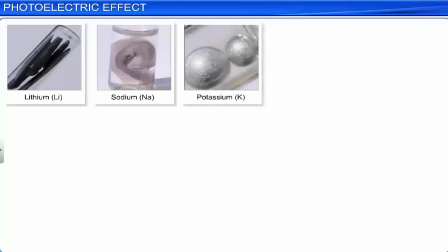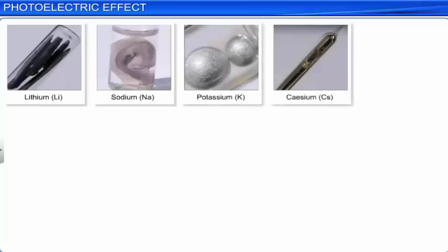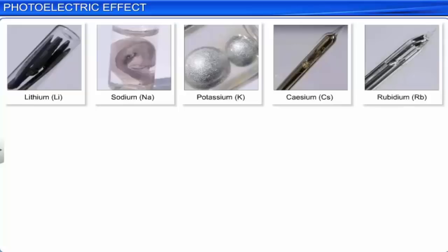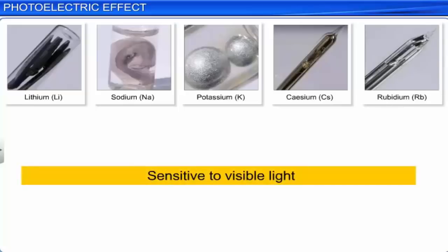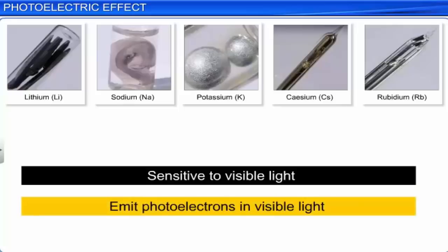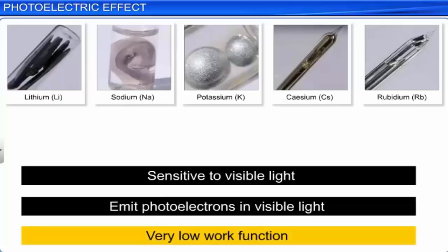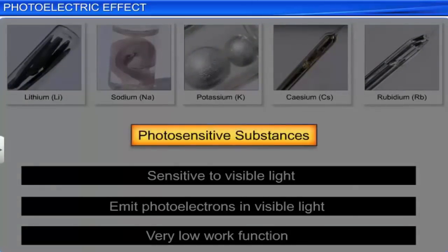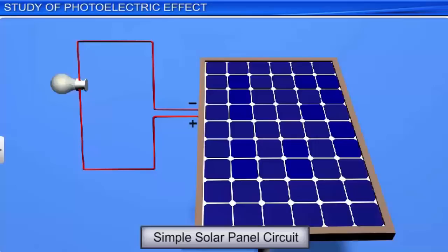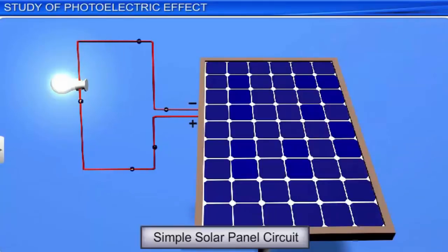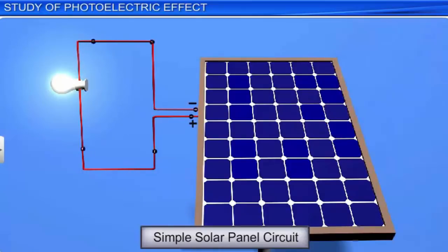Whereas some alkali metals, such as lithium, sodium, potassium, cesium, and rubidium, are sensitive even to visible light. Such metals which emit photoelectrons in visible light and have a very low work function are known as photosensitive substances. A solar panel can be used to produce electricity, and its working is based on the photoelectric effect. Let's learn about this through an experiment.